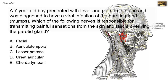This network is called the pes anserinus, and it leaves the parotid gland as groups of nerves such as the temporal, zygomatic, buccal, mandibular, and cervical branches. These branches and the network of nerves within the parotid gland are motor — they are motor to the muscles of facial expression and have nothing to do with the sensory innervation of the parotid fascia or the skin overlying the parotid gland.